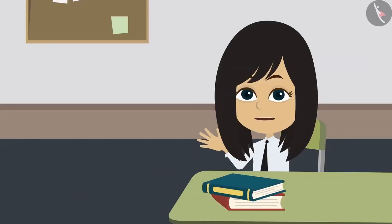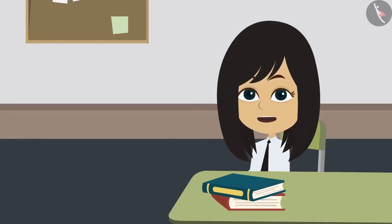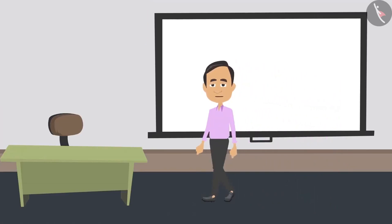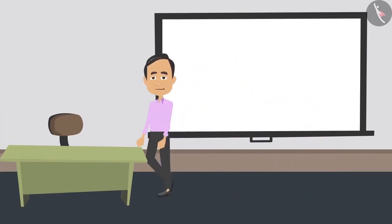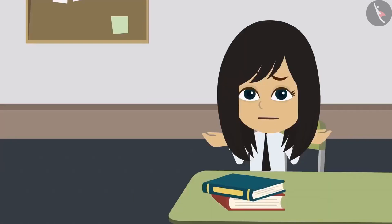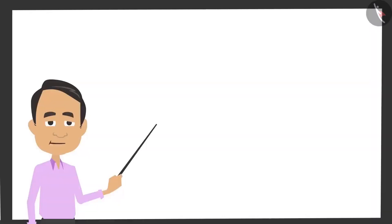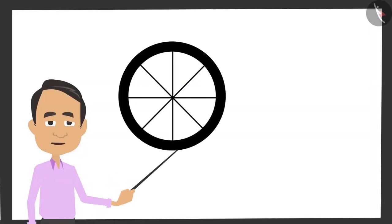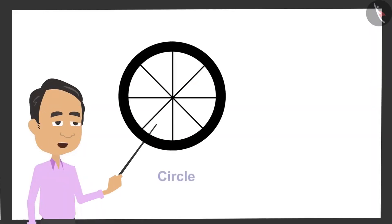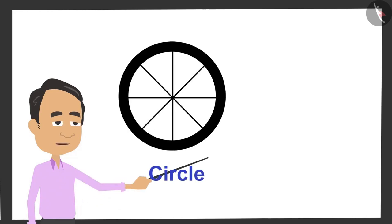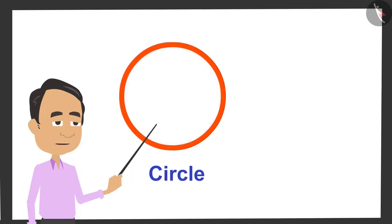Before measuring any circle, you have to understand what a circle is. A round figure is called a circle. Yes, but what is a round figure? What does this mean? Let me explain. I will show you the wheel of a bicycle. It is round, that is, in the shape of a circle. Let's make a simple drawing of this wheel so that it is easy to understand.